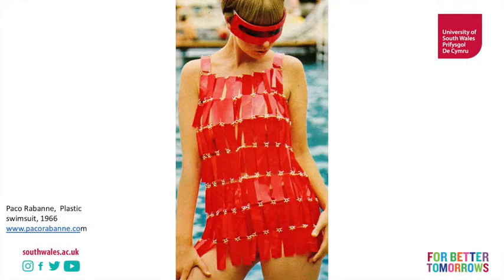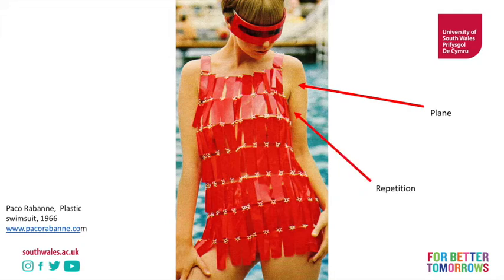Next we move to a classic of fashion design: Paco Rabanne from the 1960s. We can see nothing but plane — repeated plane across the entire body. The repetition of plane on the body means the plane will look different depending on where it sits. It's the exact same plane placed in different parts of the body, and the undulations of the body underneath are what creates the silhouette of this design.